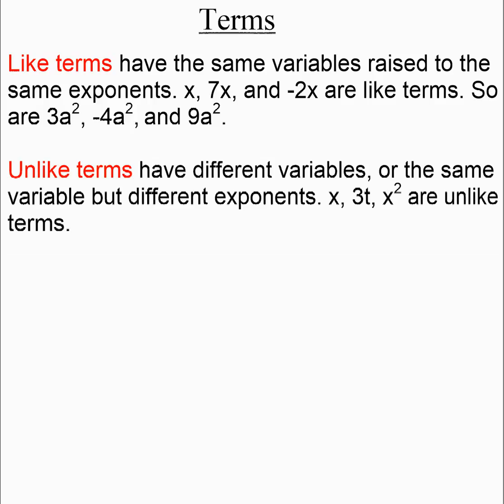Like terms are the same variable to the same exponent. So x, 7x, and negative 2x — those are like terms, as are 3a squared, negative 4a squared, and 9a squared. But what are not like terms, for example, are x and x squared. Terms that are not like terms have different variables, or have the same variable but different exponents.